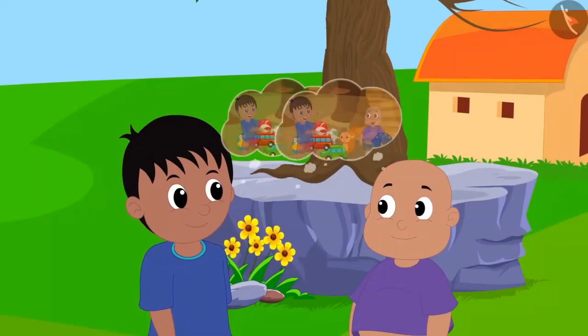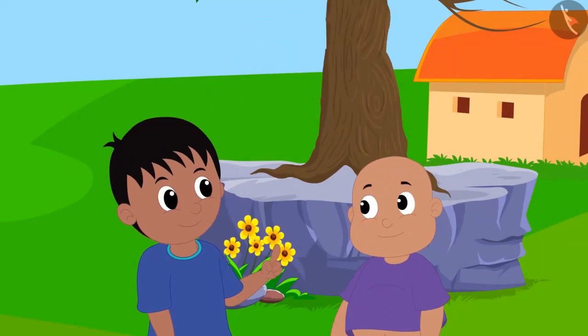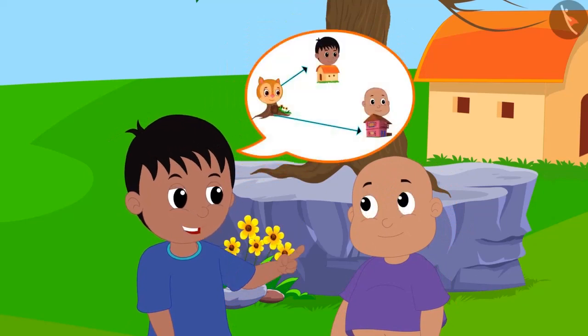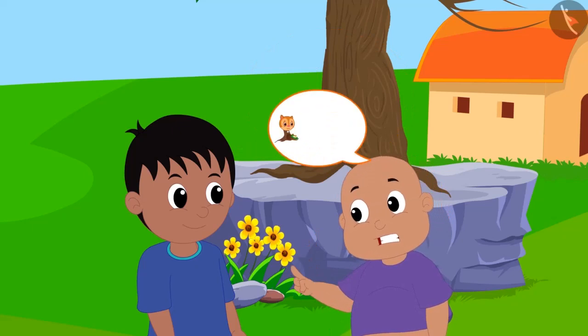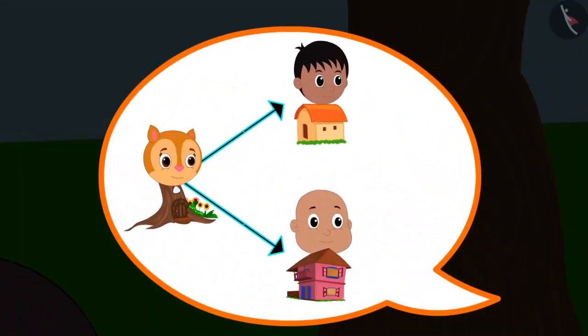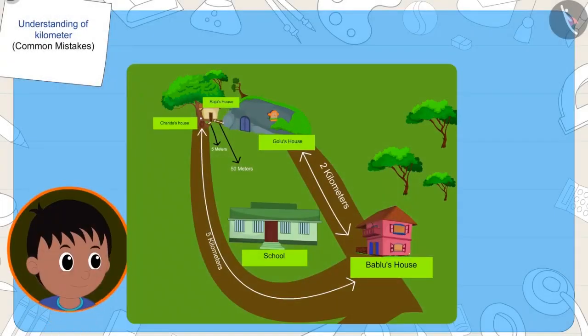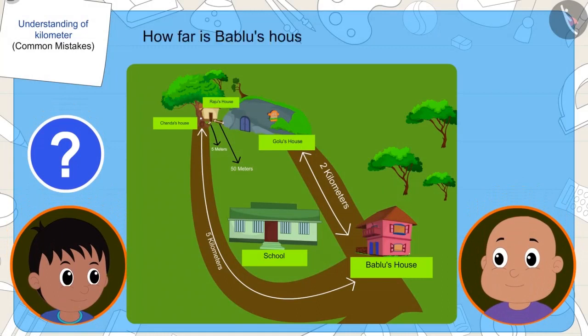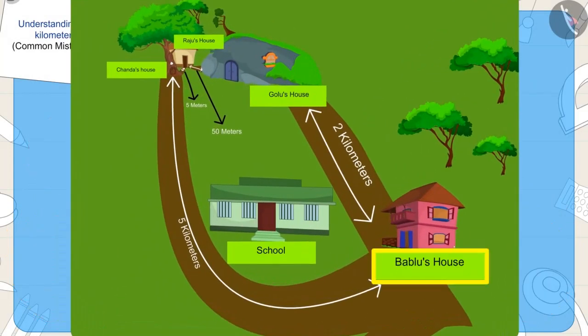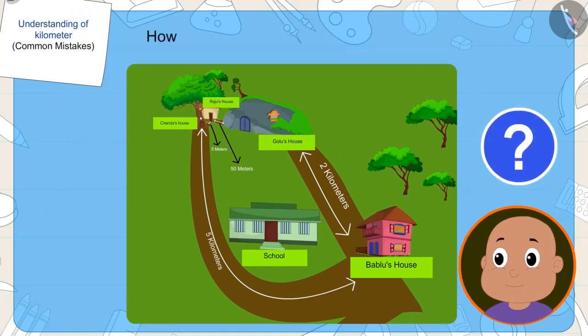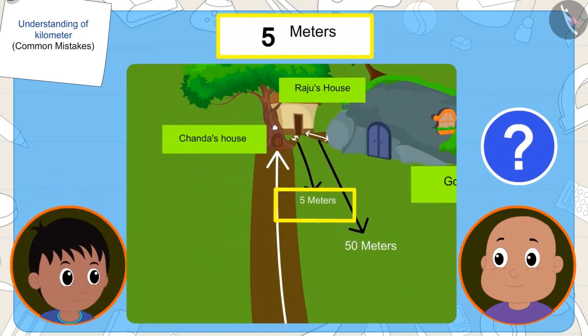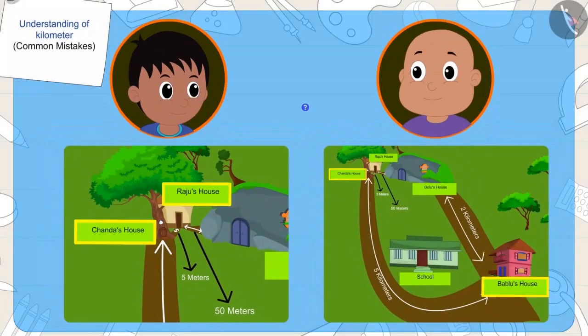Raju and Babalu are going to play at Chanda's house. Raju tells Babalu that his house is closer to Chanda's house. But Babalu is arguing with Raju that their two houses are at equal distances from Chanda's house. Raju asks Babalu, how far is his house from Chanda's house? Babalu tells him that his house is five kilometers away from Chanda's house. Then Babalu asks him, how far is his house from Chanda's house? Raju said, at a distance of five meters. Children, can you tell me, is Babalu right?